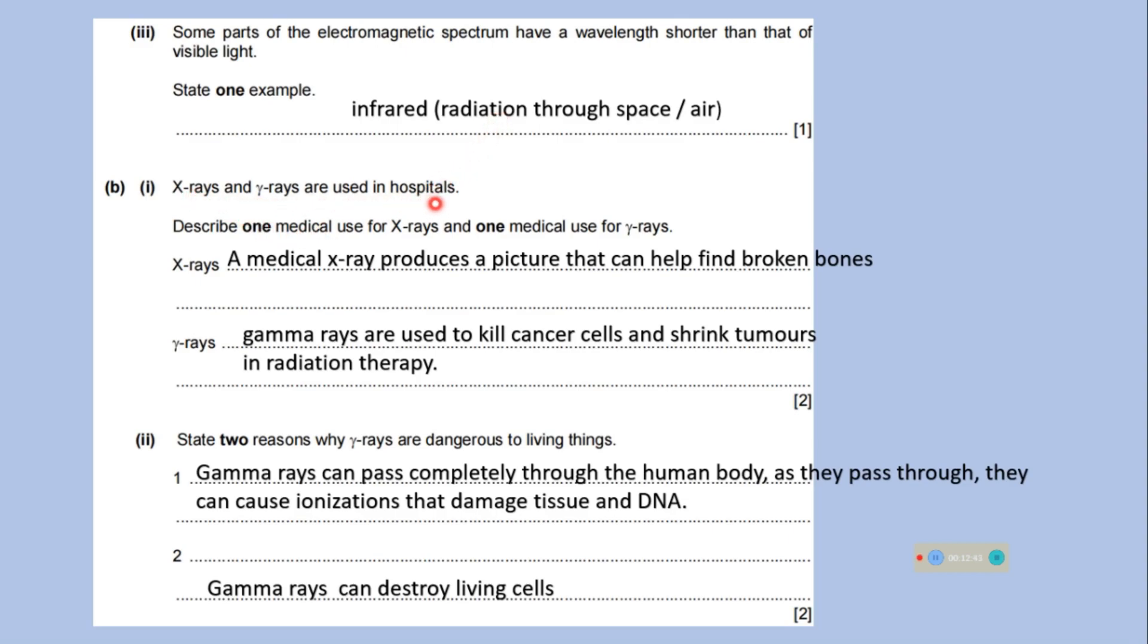X-rays and gamma rays are used in hospitals. Describe one medical use for X-rays and one medical use for gamma rays. For X-rays, we can write that a medical X-ray produces a picture that can help find broken bones. For gamma rays, we can write that gamma rays are used to kill cancer cells and shrink tumors in radiation therapy.